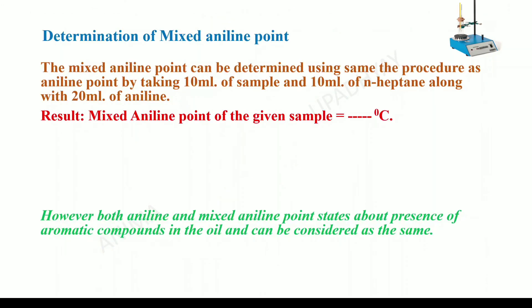You can also determine the mixed aniline point using the same apparatus and procedure. The only difference is that here we take the oil along with n-heptane — equal volumes of oil and n-heptane (10 ml each) are taken along with 20 ml of aniline. The same procedure is repeated and the mixed aniline point is recorded in degree centigrade. Both aniline point and mixed aniline point indicate the presence of aromatic compounds in the oil.